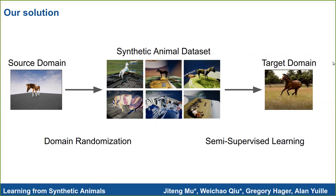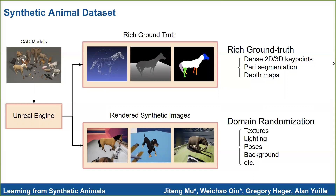We propose to use both domain randomization and semi-supervised learning to address the challenge. Given a CAD model along with a few animation sequences, we can render an animal with a bunch of random parameters. For each rendered image, we also generate rich ground truth, including depth maps, part segmentation, and dense keypoints in both 2D and 3D.